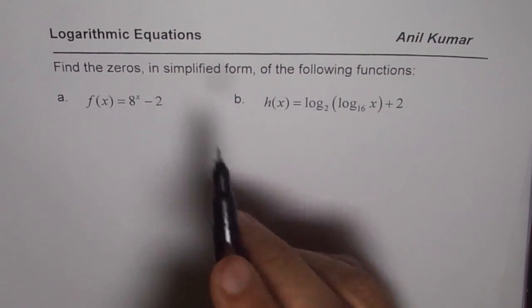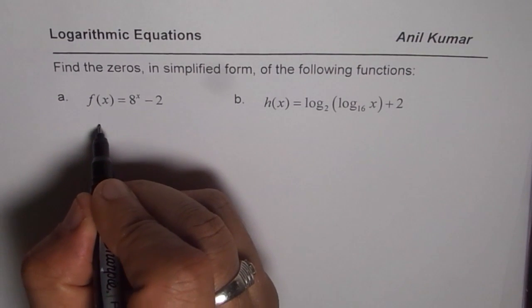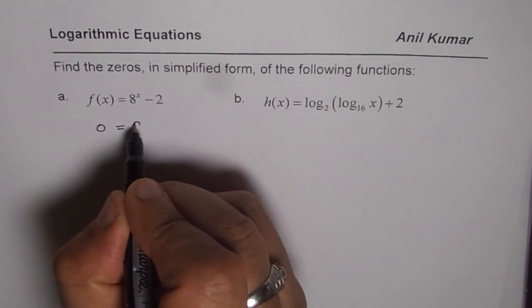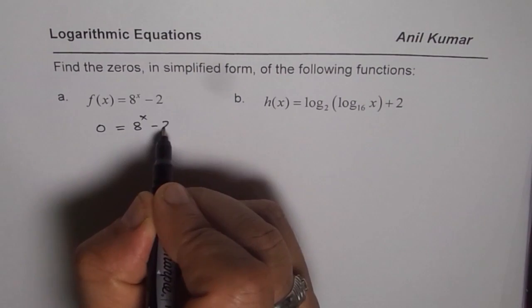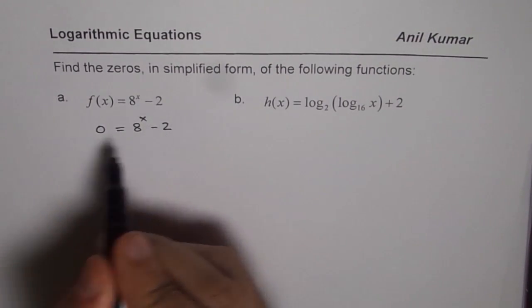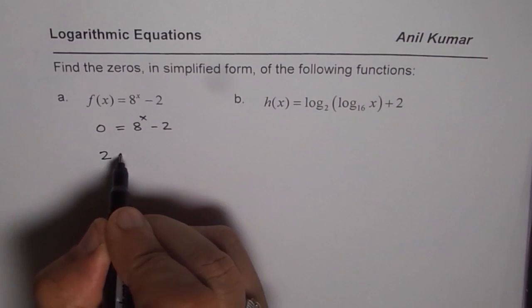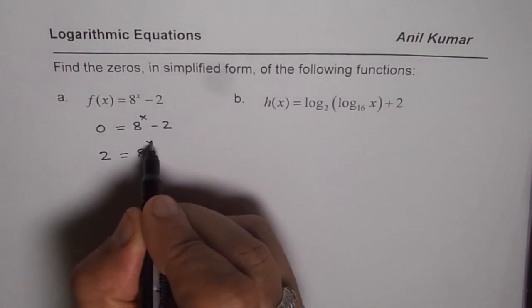When we say zeros, that means f of x is 0. Let's solve one by one. So we get 0 equals 8 to the power of x minus 2. Now we can bring 2 to the left side. So we get 2 equals 8 to the power of x.